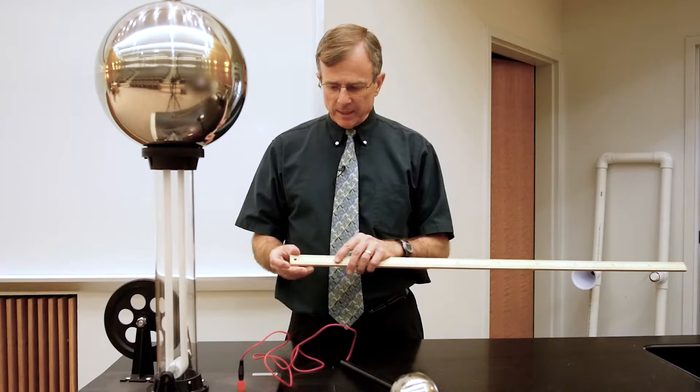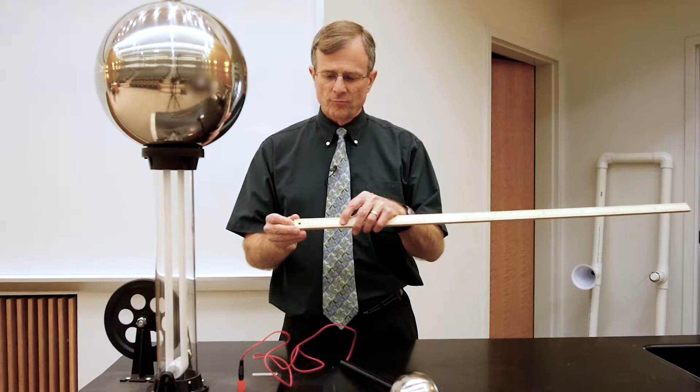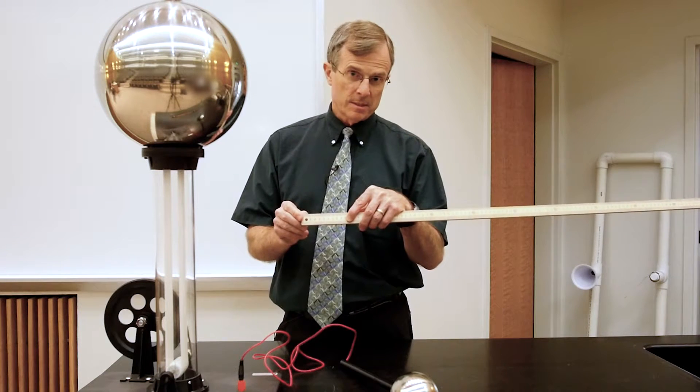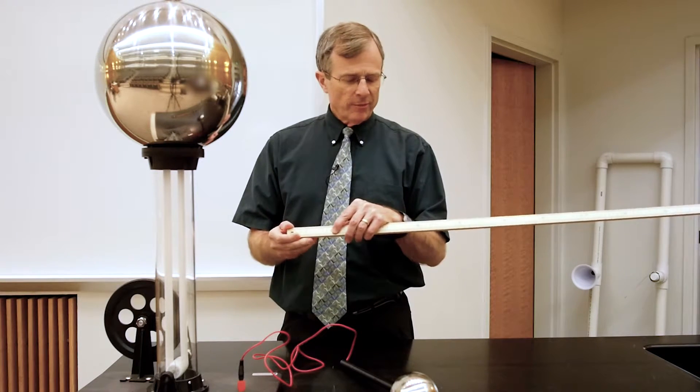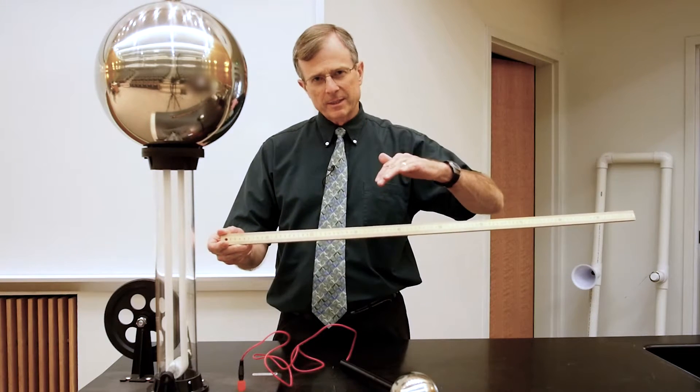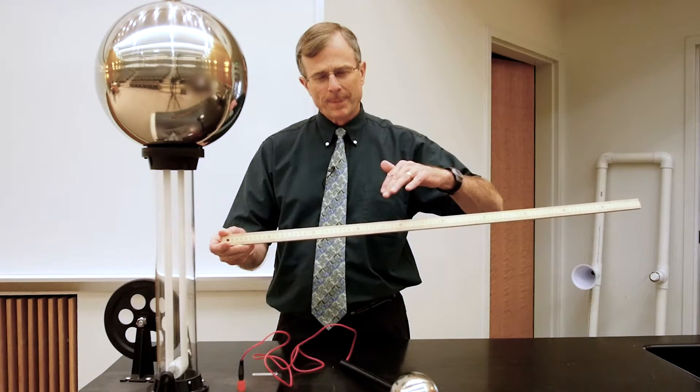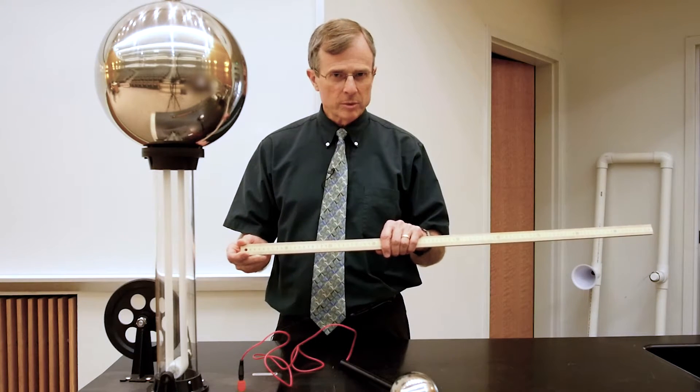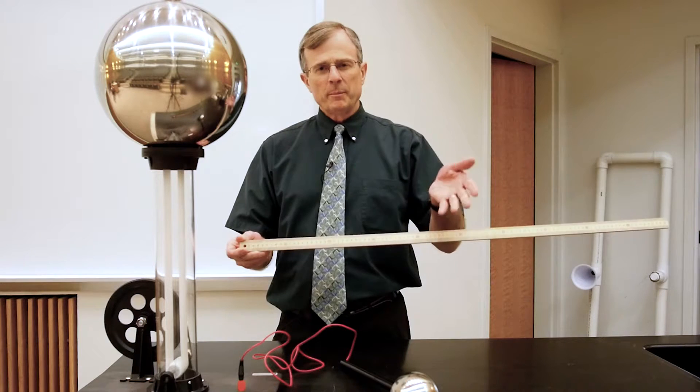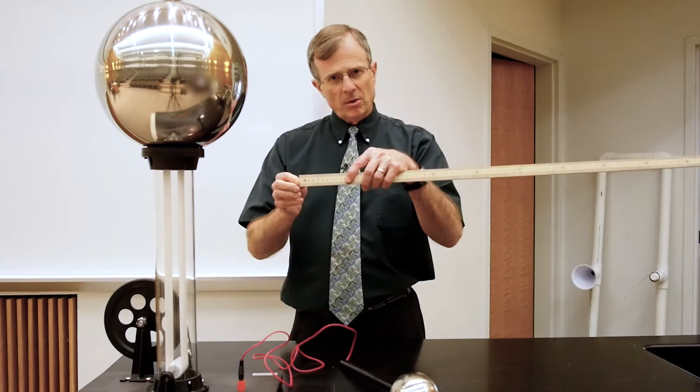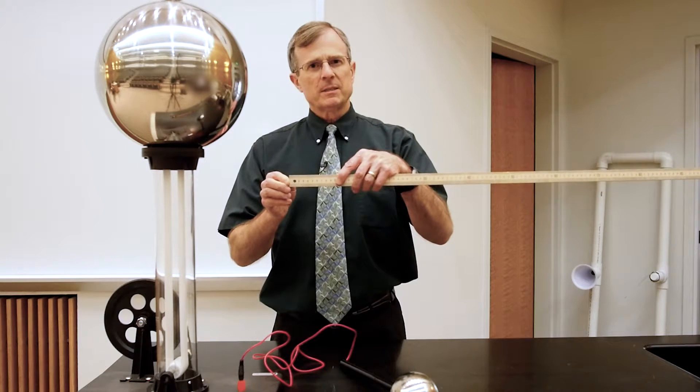But I can get an arc across a 10 centimeter distance. And so if you divide 3 million volts per meter, you divide both the numerator and the denominator by 10, then 3 million divided by 10 is 300,000 volts, and 1 meter divided by 10 is 10 centimeters. So we will be able to get an arc over a distance of about 10 centimeters.